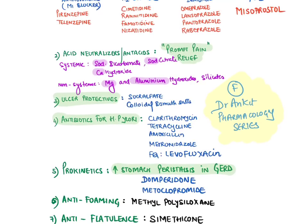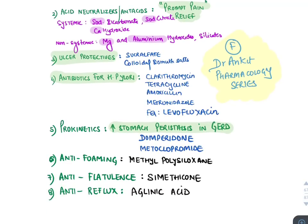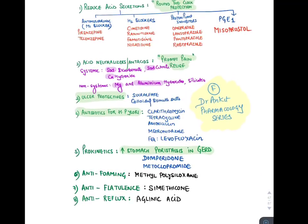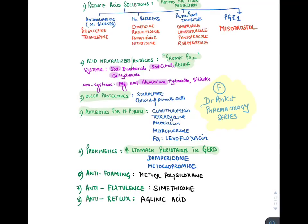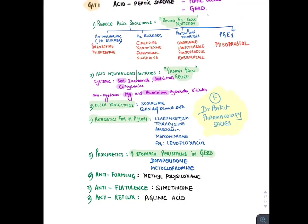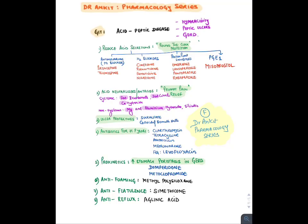Then we have ulcer protective drugs. If there is an ulcer, they form a protein or peptide covering over the ulcer base. These are sucralfate and colloidal bismuth salts. Then we have antibiotics for Helicobacter pylori: clarithromycin, tetracycline, amoxicillin, metronidazole, and levofloxacin — not ciprofloxacin. Then we have prokinetics, which increase stomach contraction so food rapidly moves into the intestine and does not reflux back into the esophagus. Prokinetics are used in GERD along with proton pump inhibitors. We also have anti-foaming drugs, antiflatulence, and algenic acid as an anti-reflux drug.